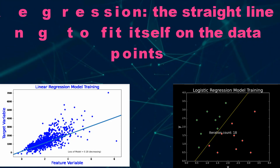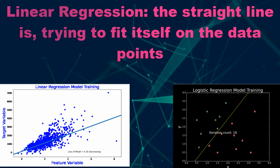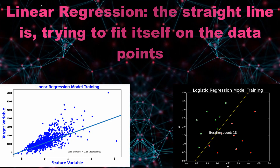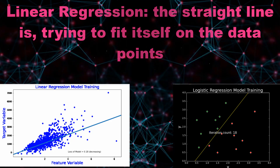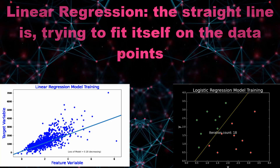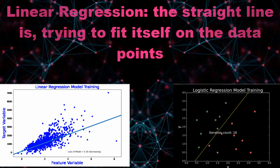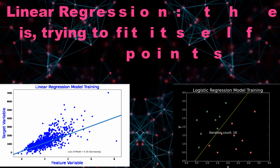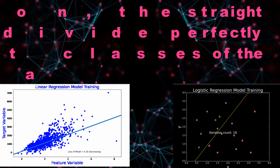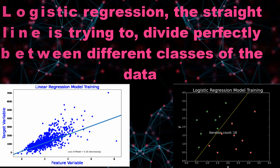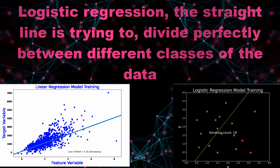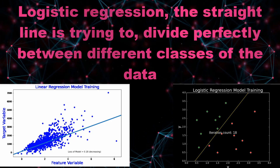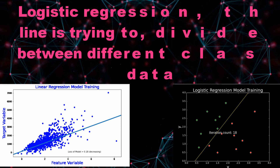Note that both linear regression and logistic regression use a line to solve the problem. In linear regression, the straight line tries to fit itself on the data points. However, in logistic regression, the straight line tries to divide perfectly between the different classes of data points.